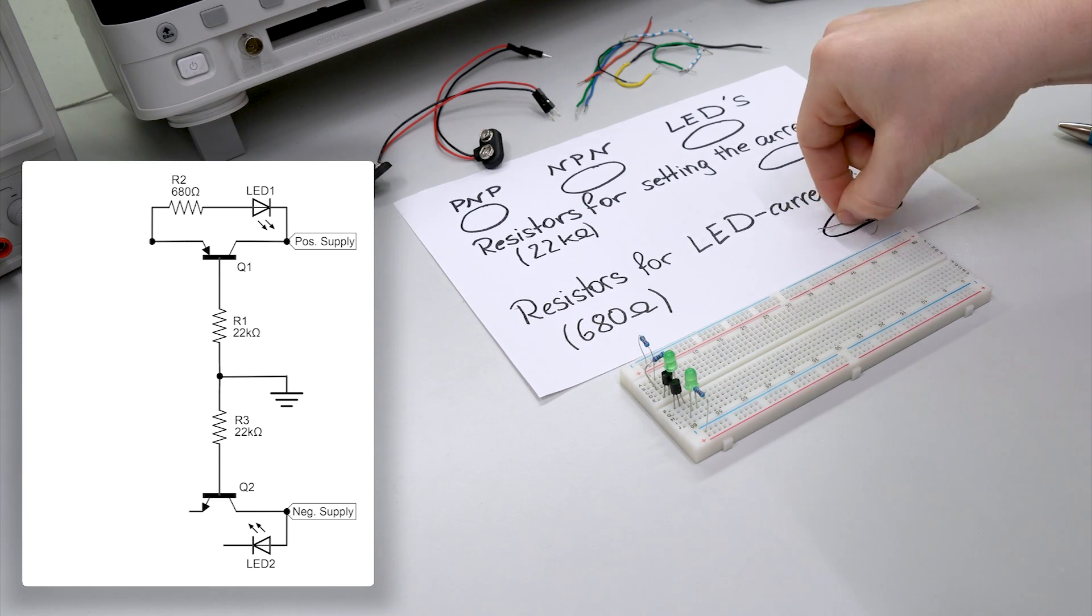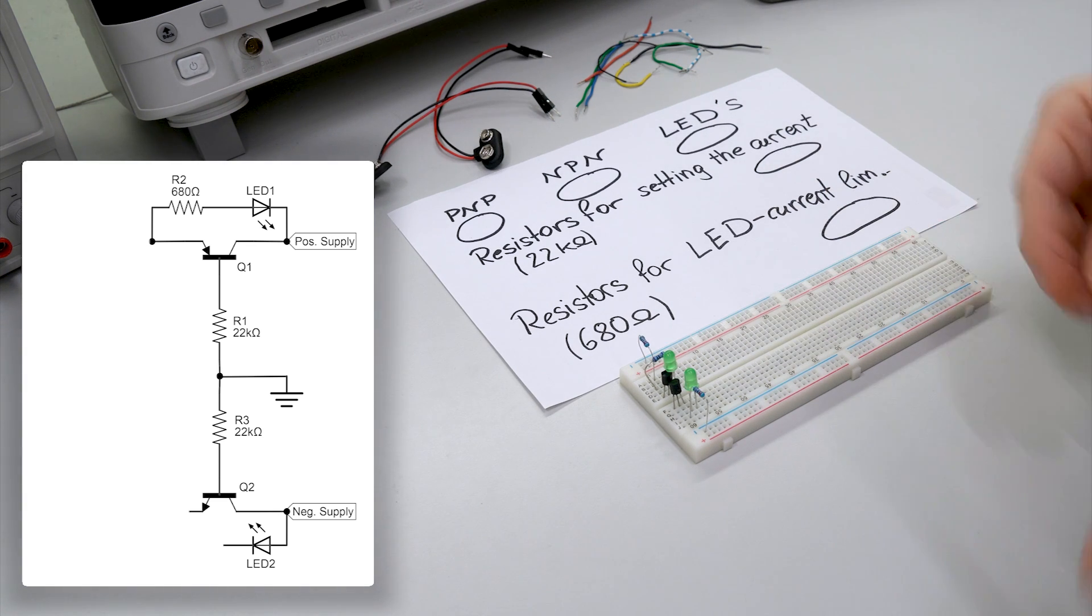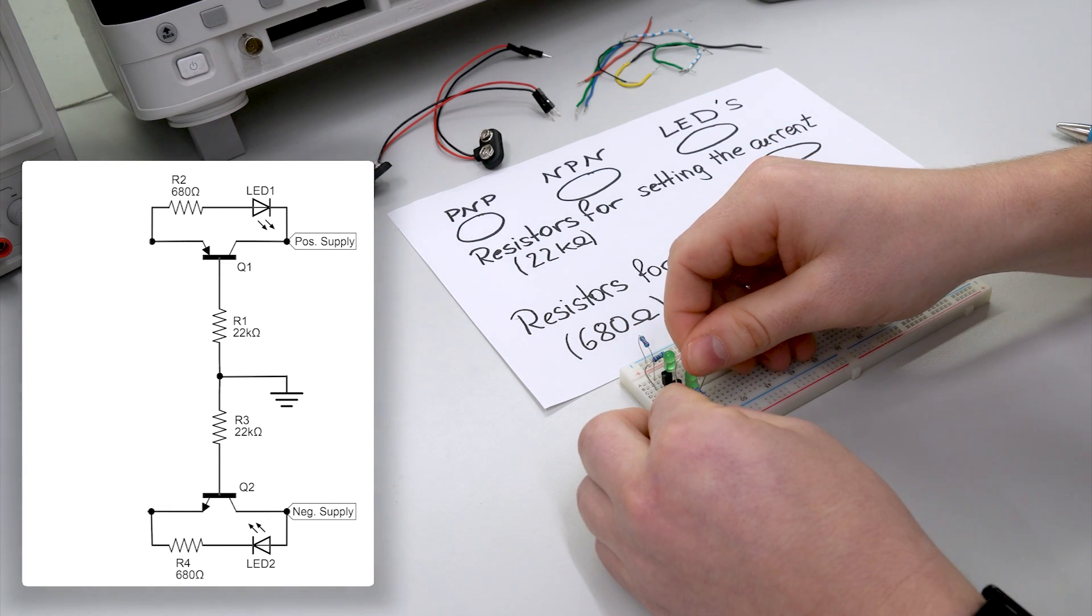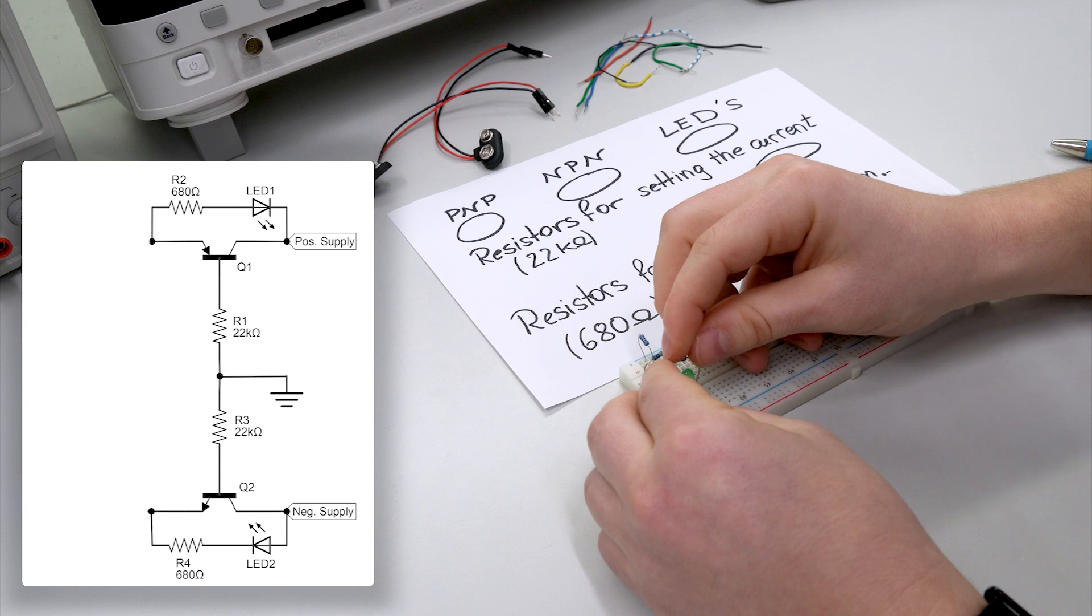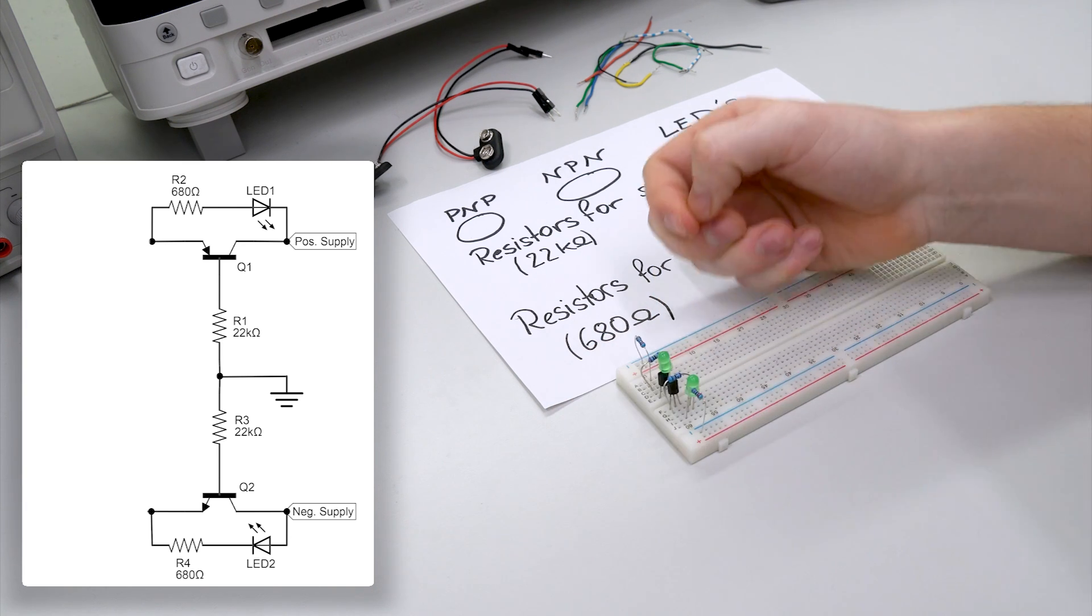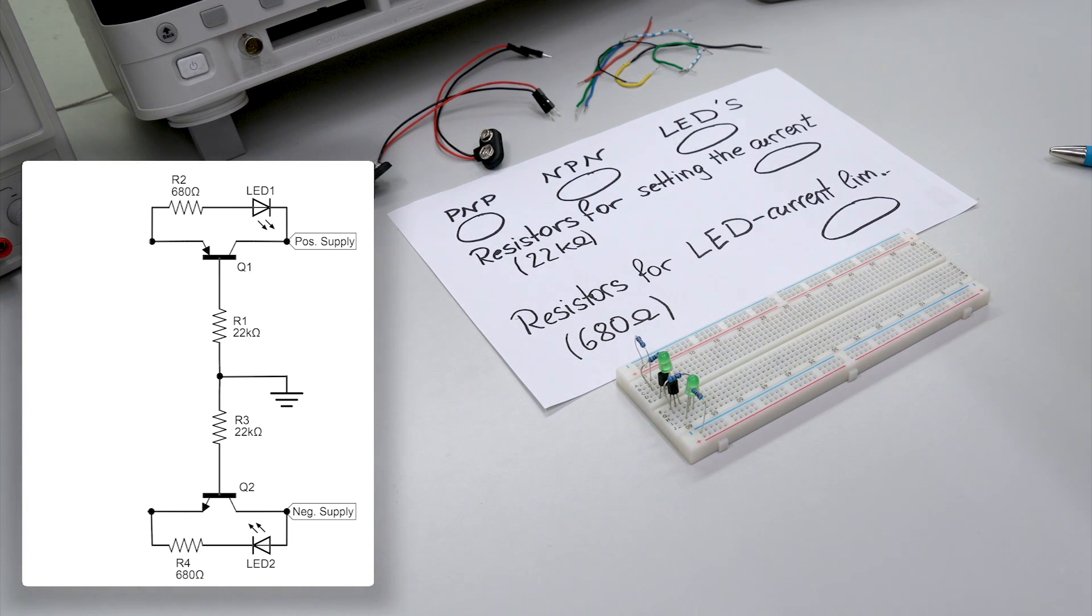Anode at the collector. And with the last resistor, the last current limiting resistor, we connect the cathode to the emitter of the transistor. So that is done.